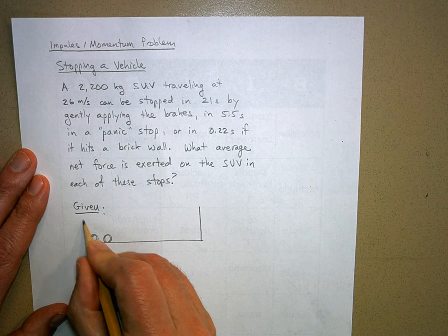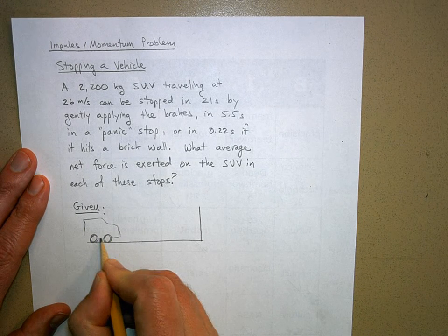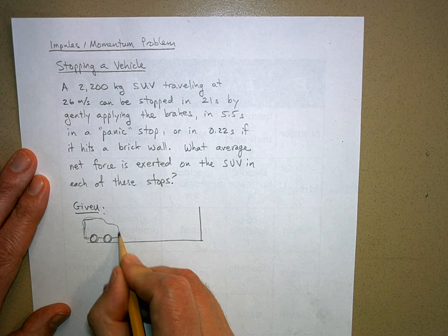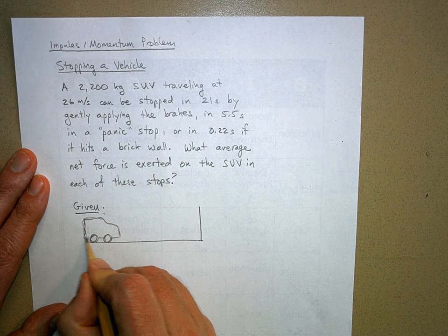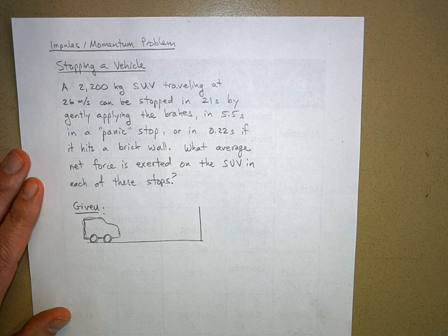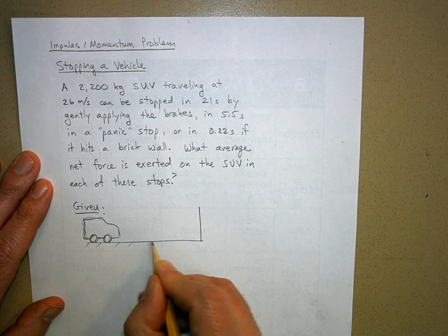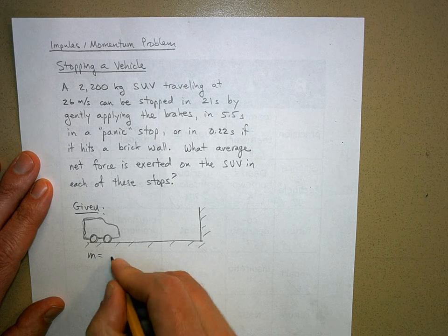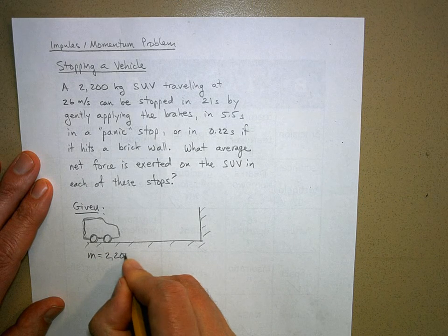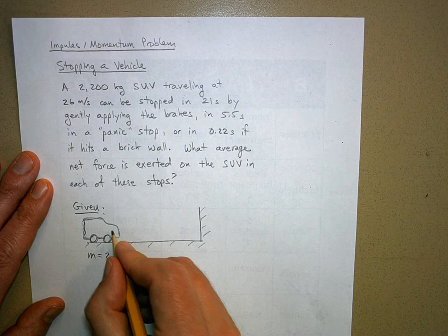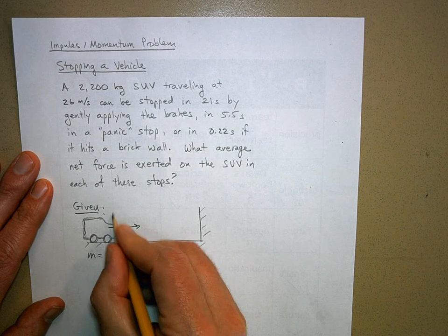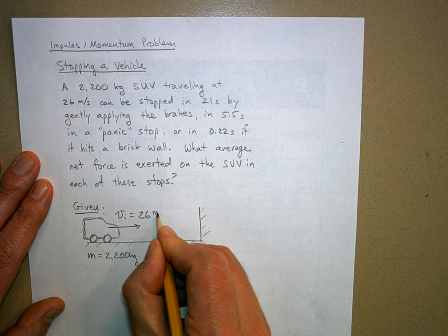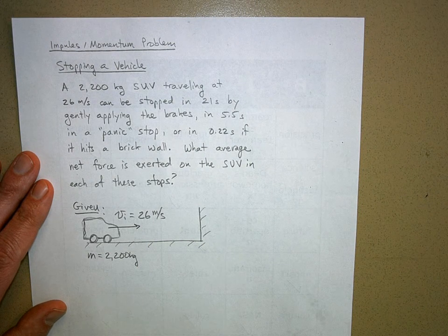Here's my big SUV, it's the new SUV by Lincoln called the Lincoln Compensator. It has a mass of 2,200 kilograms and an initial velocity of 26 meters per second.